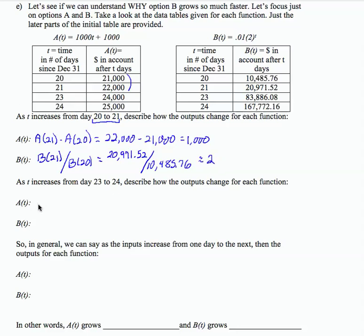Let's look again at what happens from 23 to 24. We have A of 24 minus A of 23. This is function notation, meaning the output that goes with an input of 24 is 25,000 minus 24,000, which again equals 1,000.